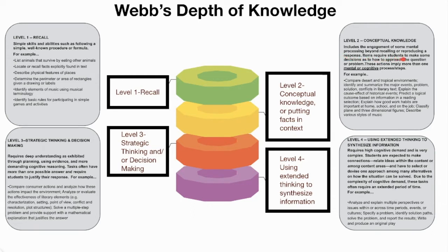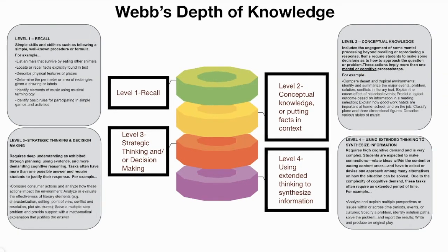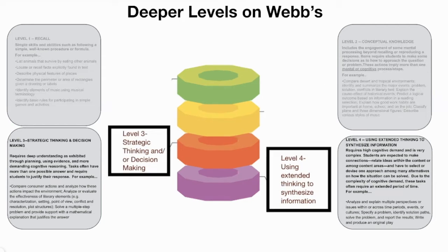Level two tasks include the engagement of some mental processing beyond recalling or reproducing a response. Often these tasks require students to make some decision as to how to approach the question or problem, and they often imply more than one mental or cognitive process or step. But when talking about deeper level thinking on Webb's Depth of Knowledge, higher-level thinking is equated with the deeper levels — for example, level three, or depth of three: strategic thinking and decision making. These tasks require deep understanding in the form of planning, using evidence, and more demanding cognitive reasoning, and they have more than one possible answer and require students to justify their response.